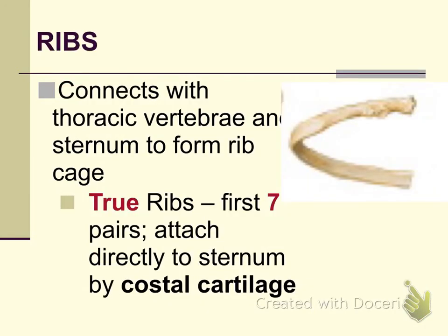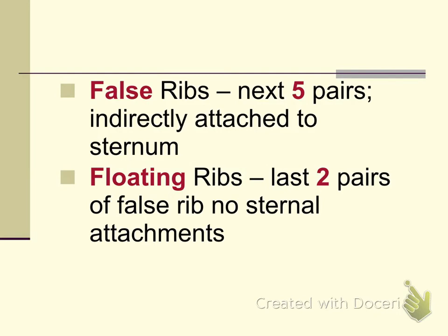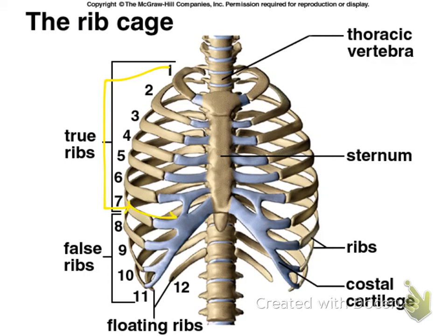Ribs are connected to the thoracic vertebrae. Because there are 12 thoracic vertebrae, there are 12 pairs of ribs. The first seven pairs are called the true ribs because they are directly attached via costocartilage to the sternum or breastbone. The next five pairs are the false ribs, meaning they are indirectly attached to the sternum via costocartilage — specifically attaching to the seventh rib. Within the five pairs of false ribs, the last two pairs are called floating ribs because they do not attach to the costocartilage at all.